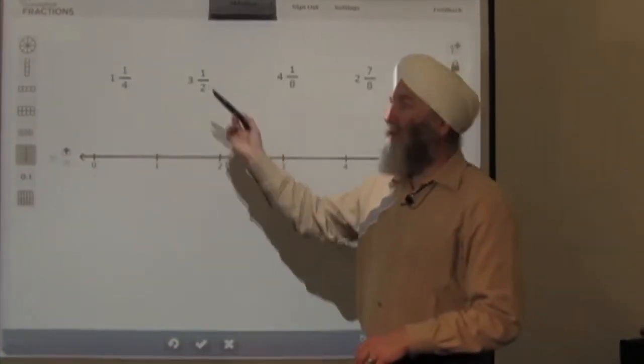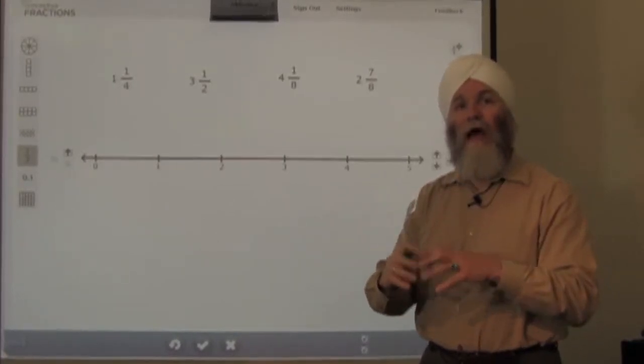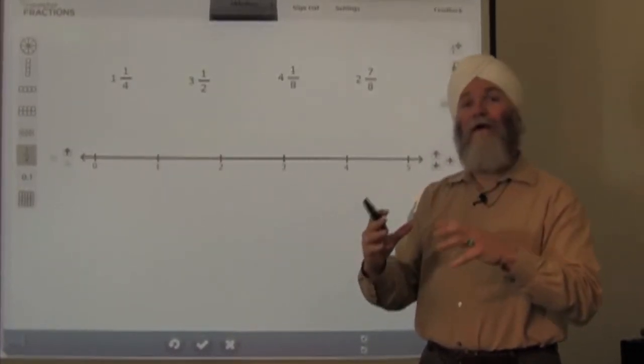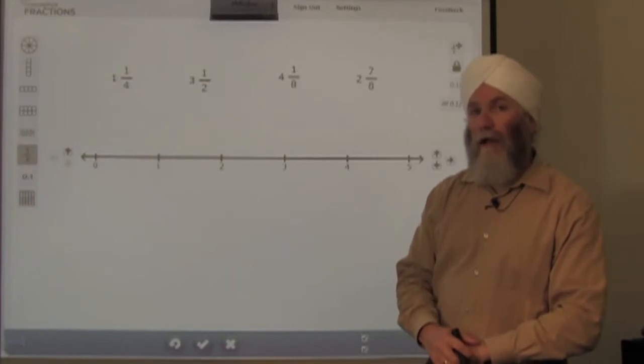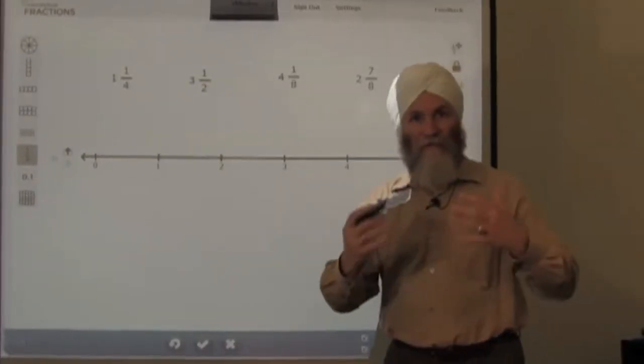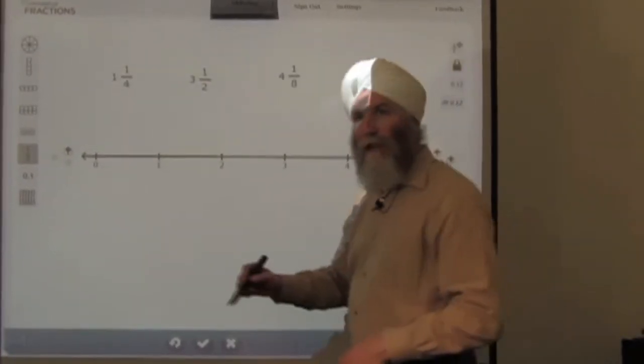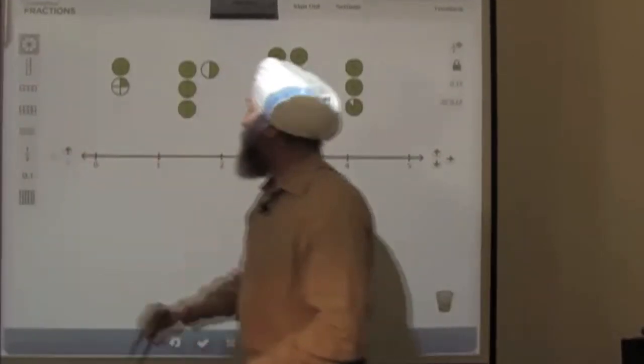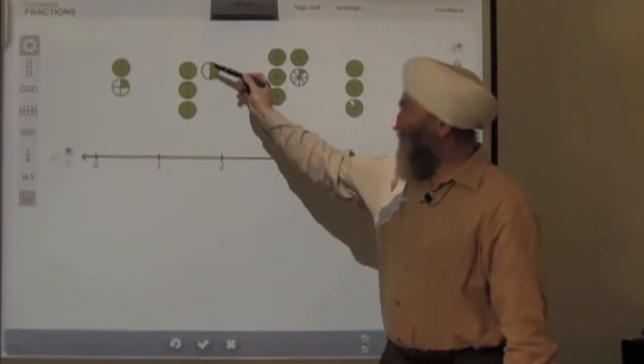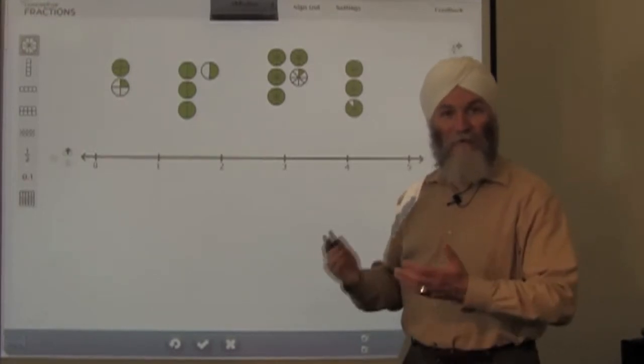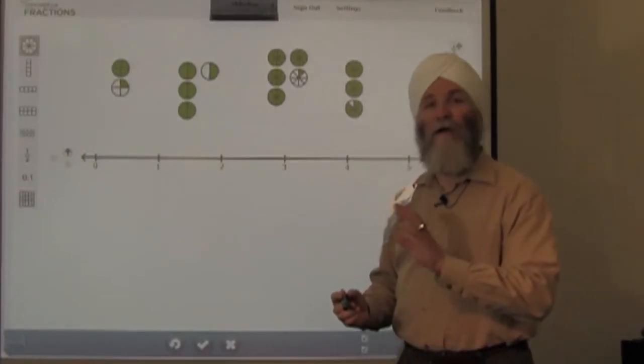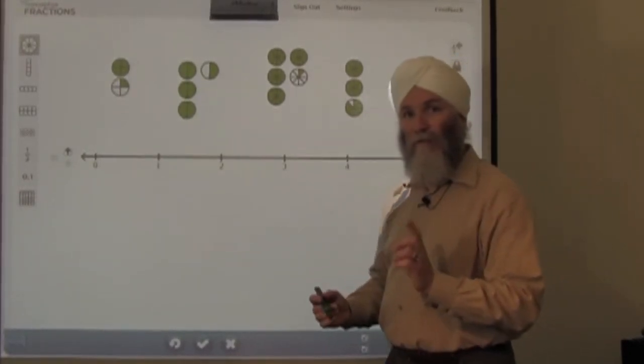For instance, with three and a half, when I create the circle fractions, how many whole circles am I going to have, and what will the fractional part look like? So I can have a discussion and have the students predict what the visual is going to look like, and then, just like this, I can show it to them. Yes, in fact, three and a half is three wholes and one half. There's a one-to-one relationship between that visual presentation and the numeric representation.